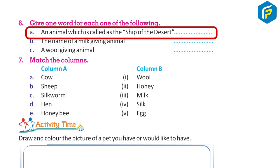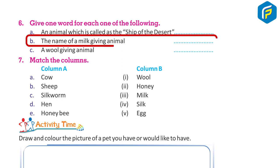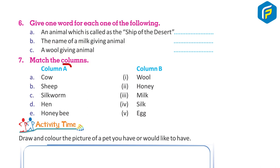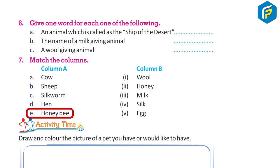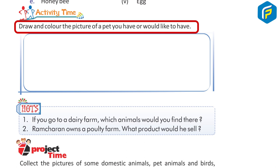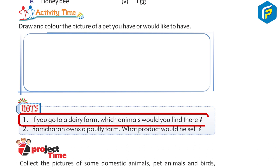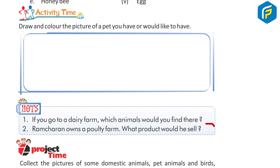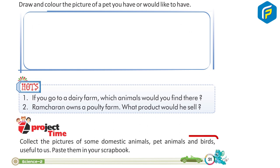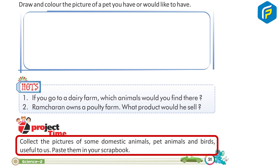Six — give one word for each of the following: a) An animal which is called the ship of the desert. b) The name of a milk-giving animal. c) A wool-giving animal. Seven — match the column: Column A: a) cow, b) sheep, c) silkworm, d) hen, e) honeybee. Column B: 1) wool, 2) honey, 3) milk, 4) silk, 5) egg. Activity time: draw and color the picture of a pet you have or would like to have. Project time: collect pictures of domestic animals, pet animals, and birds useful to us, and paste them in your scrapbook.